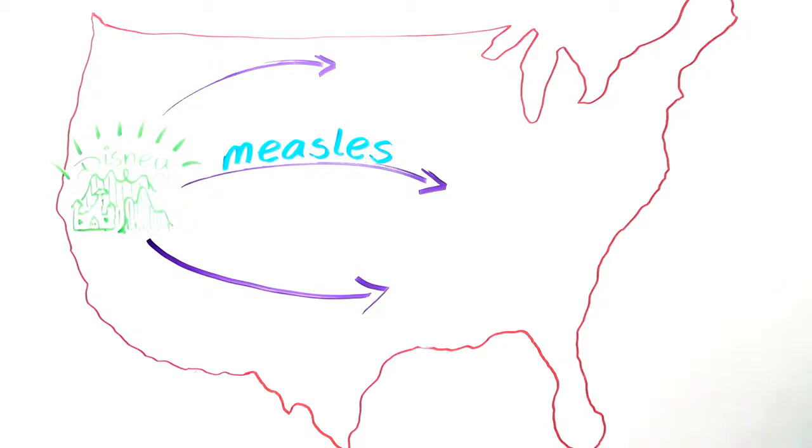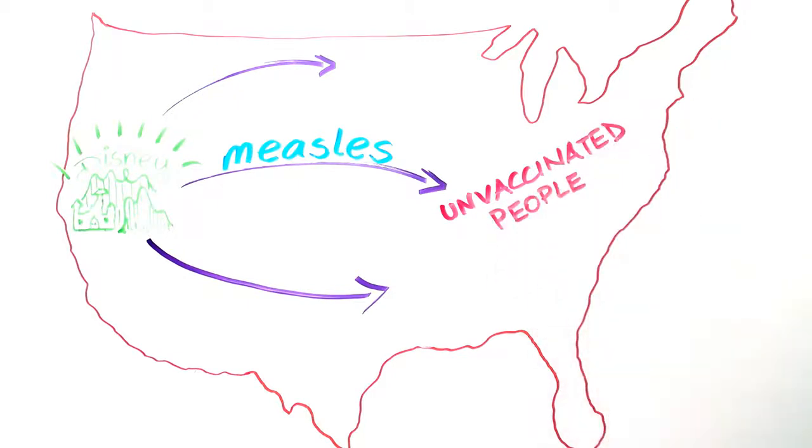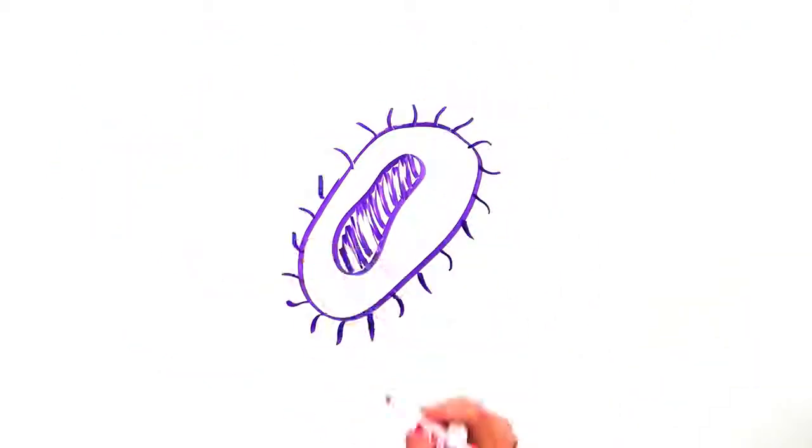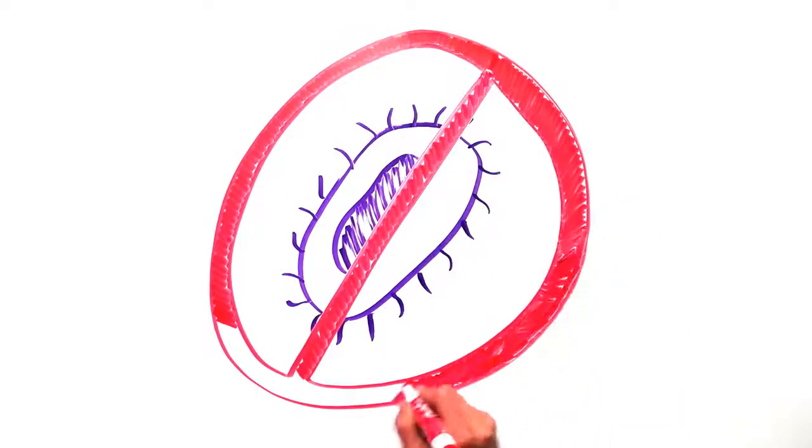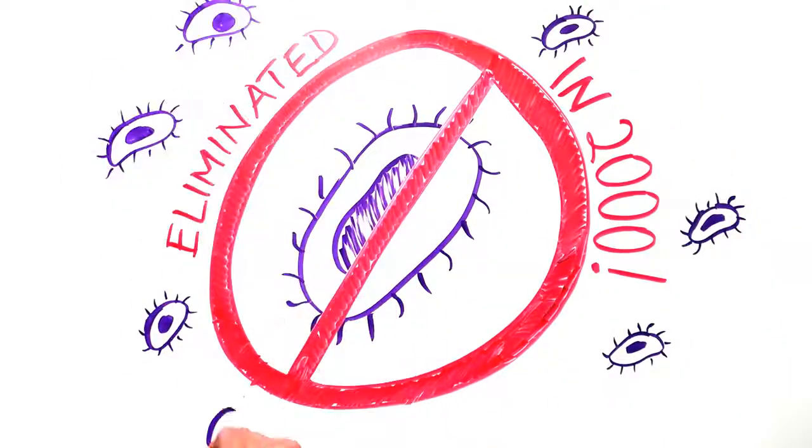There was no magic that caused this disease to spread so fast and so wide. It happened because people were unvaccinated and measles is extremely contagious. Measles has been declared eliminated in the U.S. in 2000, but now it's back.